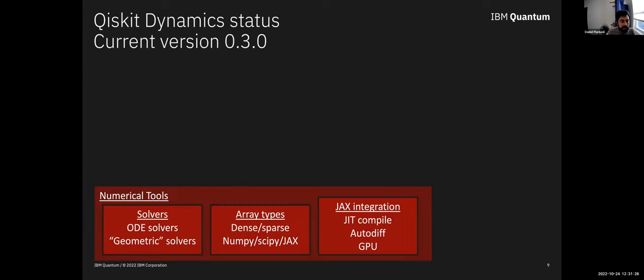In terms of the features in the package itself, the current version is 0.3.0. The first releases up to this point had been really about solidifying the numerical foundation. In terms of solvers, there's the classic ODE solvers, but we also have geometric solvers available. For the specialized class of differential equations, there's other solvers you can use, like matrix exponential based solvers. In terms of array types, obviously dense and sparse, and you can choose between numpy and Jax as the main array representation. So all of our compilation, automatic differentiation is due to Jax compatibility. Something we've added in the last release is a module doing time-dependent perturbation theory numerically. You can compute very general expansions numerically, and there's certain specialized solvers built out of that.